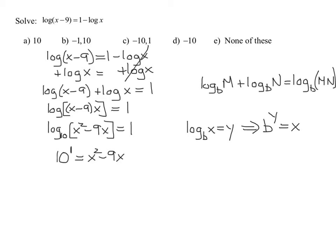Well, what is 10 raised to the first power? It's just 10. So it's x squared minus 9x. Now, what type of equation do I have? Degree 2 quadratic equation. I want everything on one side, 0 on the other. So I think I'm going to subtract 10 from both sides. I get x squared minus 9x minus 10 equals 0.